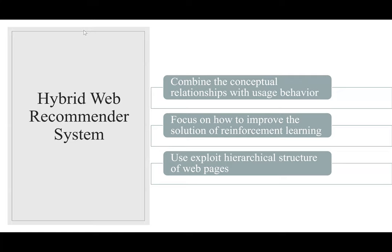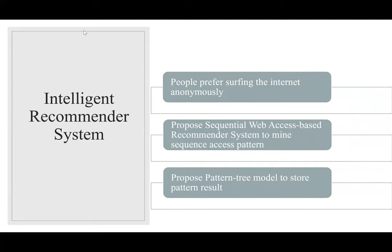Let's turn to the intelligent recommender system. Web recommendation system is one of the most commonly used systems to provide personalized web service. Techniques such as collaborative filtering and hybrid filtering have been applied to web recommendation systems. However, it is quite hard to make good use of these techniques because people prefer browsing the internet anonymously, and these techniques cannot identify whether different usernames belong to the same person. More recently, web usage mining technique is used to mine people's web browsing and searching records to build a model of people's behavior patterns.